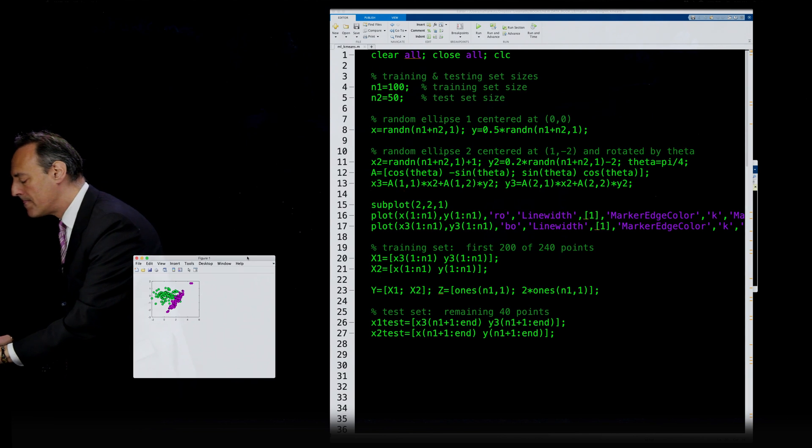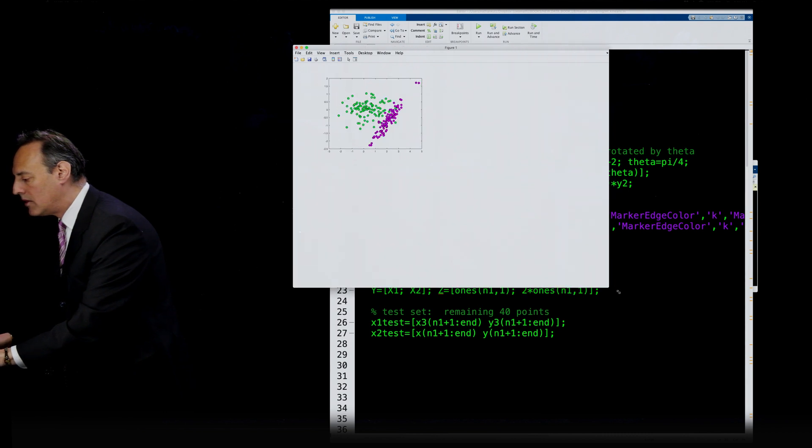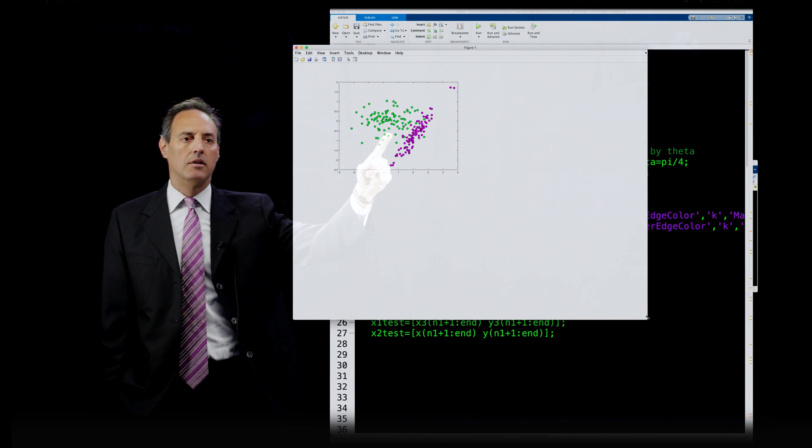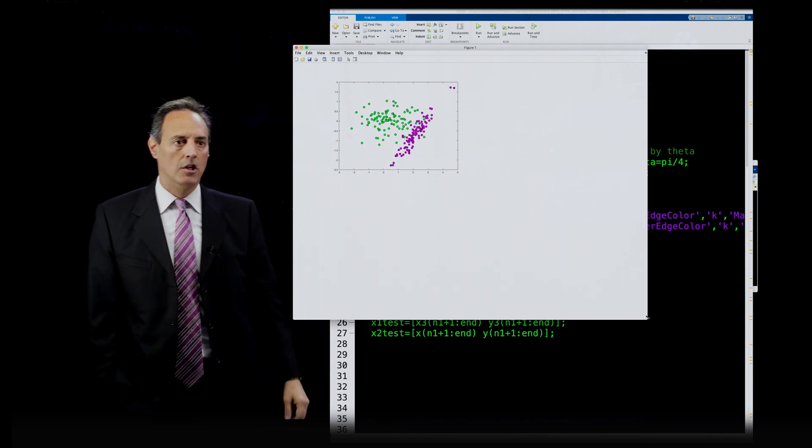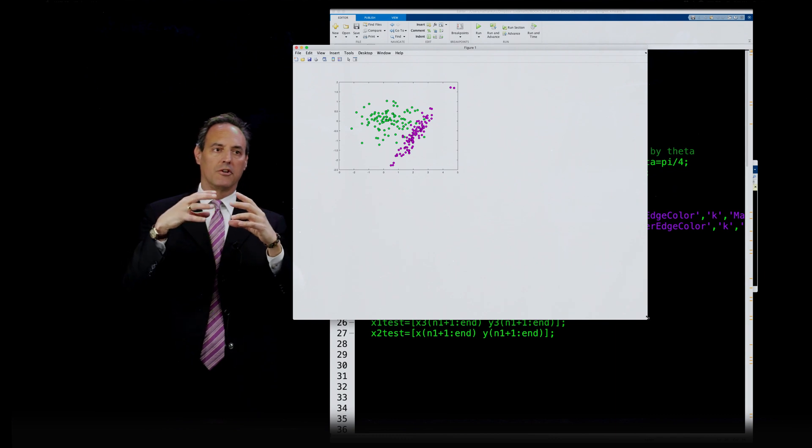So I'm going to plot this for you to show you what this look like. Here's figure one. There you go. Distribution one. Distribution two. So one is like a stretched ellipse. The other one is just an ellipse sitting near the origin.